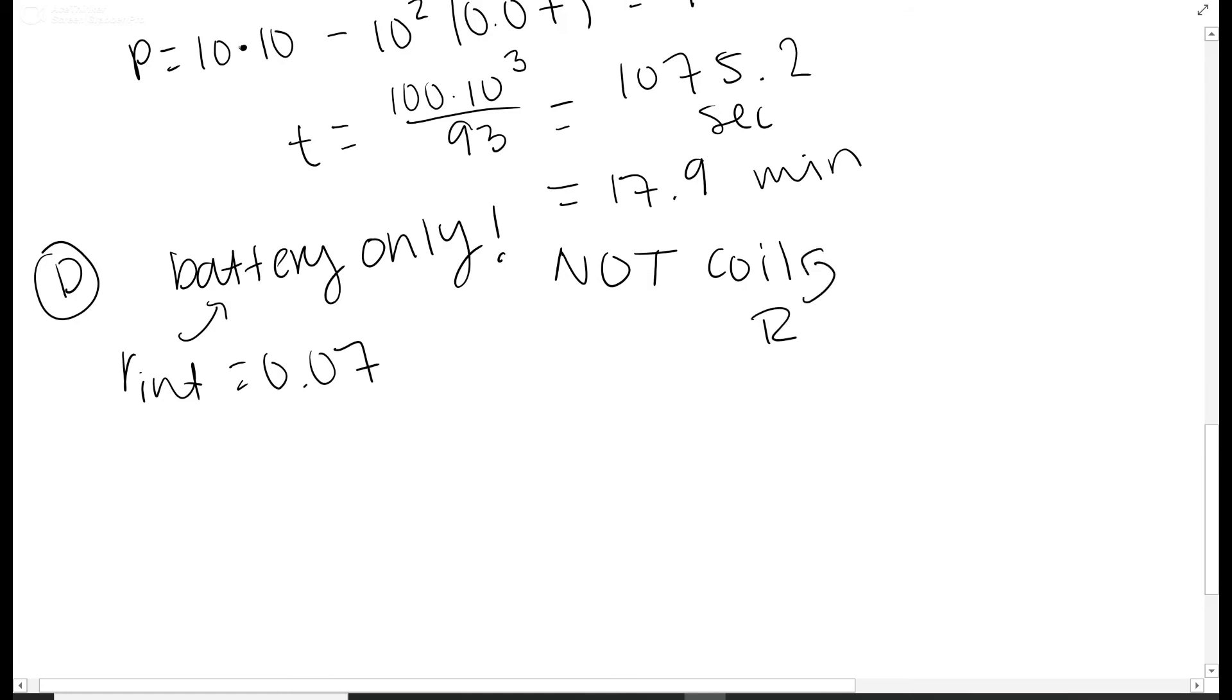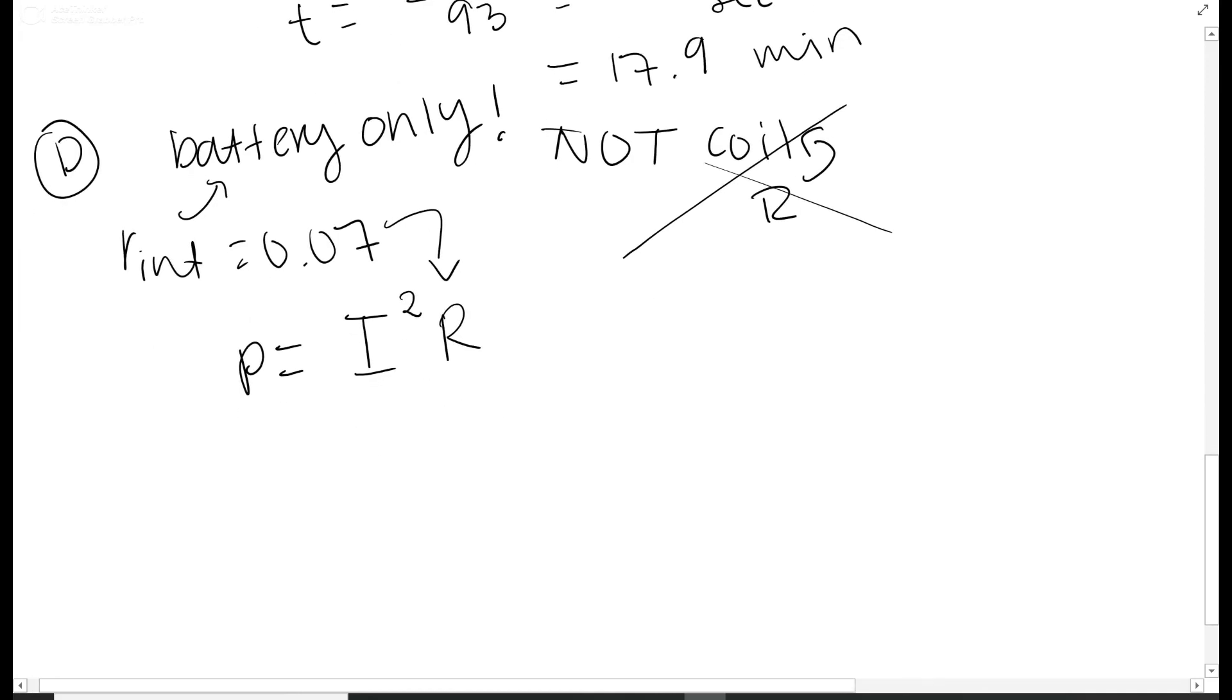They give you R_int and that is for the battery. The big R they mention is for the coil, so you don't have to find this because it's not what they want. You have that very simple equation P equals current squared times R. In this case, the R is R_internal. Even though it's big R in the equation, it is the little r internal. You're only looking at the battery, and you get 7 watts. Don't try doing all the difficult work to find big R. It's literally just the internal if it only wants the battery.